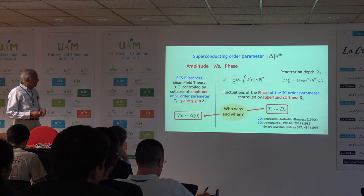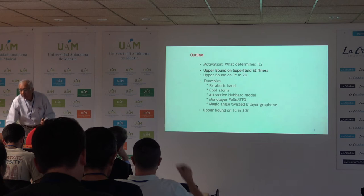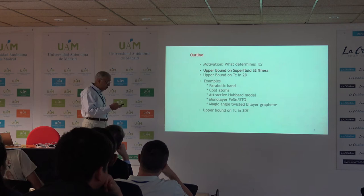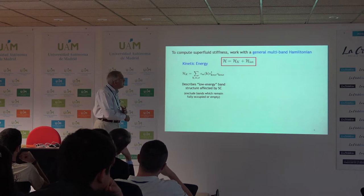One of the things we must understand in trying to understand limits of TC is to understand who wins and when. Now let me talk about the first technical aspect of what we want to do, which is to get an upper bound on the superfluid stiffness of any material. I really want to study multi-band superconductors with arbitrary interactions.